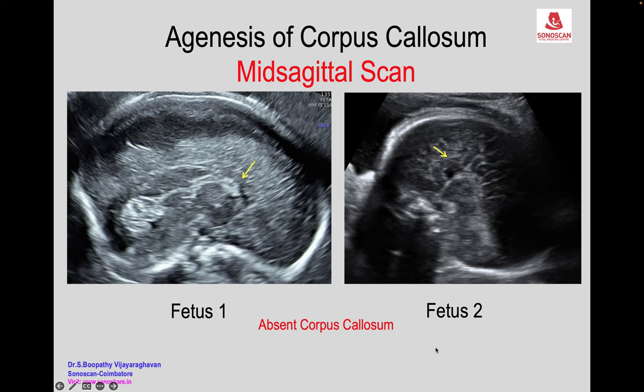In both fetuses there is absent corpus callosum, as shown by the arrows. In fetus two, another sign of agenesis of corpus callosum — namely the radiating sulci — is seen, because the cingulate sulcus is not developed and other sulci are radiating, which is visible in fetus two.